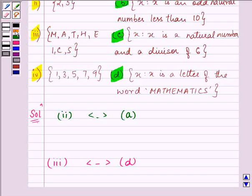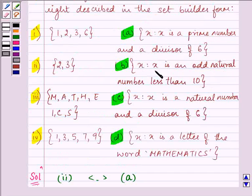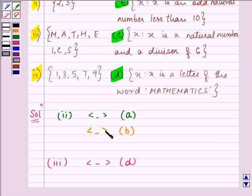Proceeding on. Now, let us look for the B part. The B part says X is to X is an odd natural number less than 10. Can you see that all these numbers are odd natural numbers and they are less than 10? So that means our answer will be for B part it will be part 4.